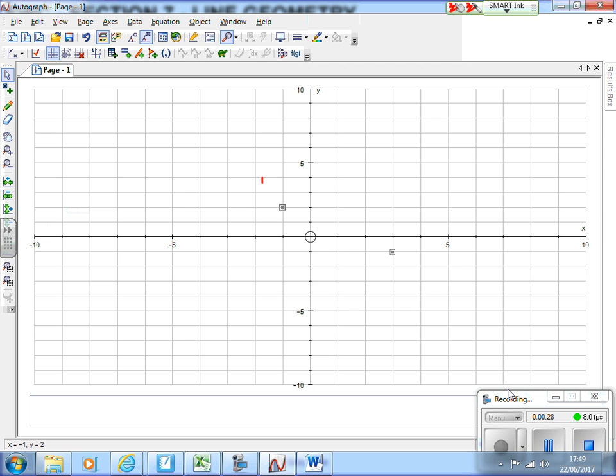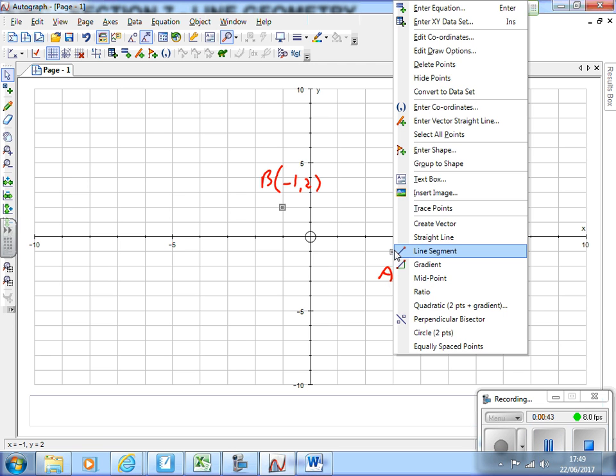This one is our B which was (-1, 2), and this one must be our A which is (3, -1). I'm trying to find the gradient of the line going between the two points, so I'll put a line on there, so there's a straight line.